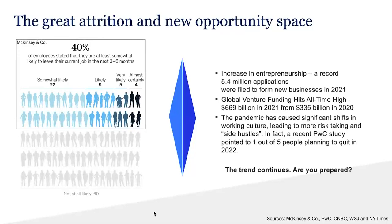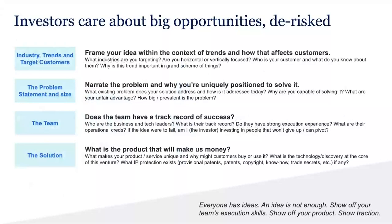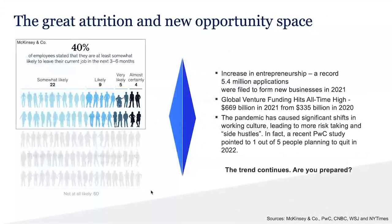The first topic is what's called the great attrition — the notion where employees working at corporate jobs are actually leaving their jobs to start their own thing. Looking at research conducted by McKinsey, PwC, CNBC, and other sources, there has been a significant increase in entrepreneurship, and a record number of applications were filed to form new businesses in 2021. These are not just digitally native businesses — they can be brick-and-mortar or franchise businesses.